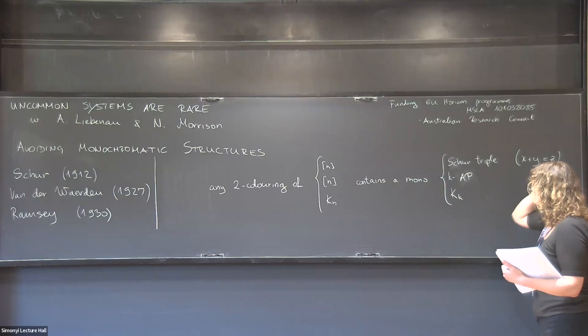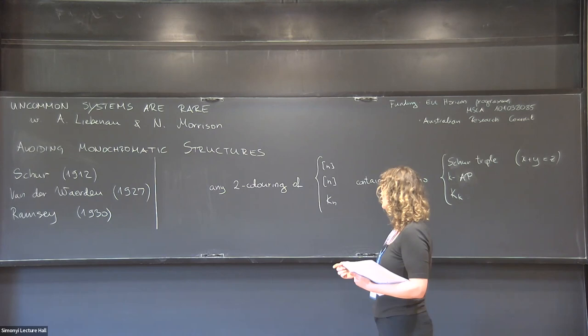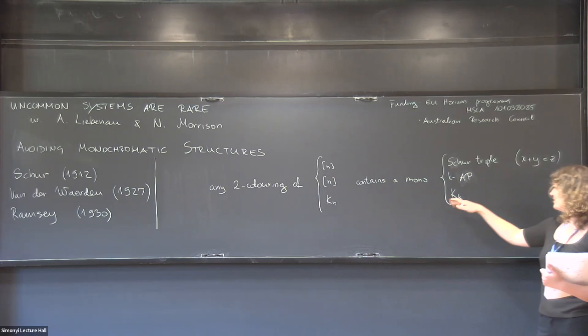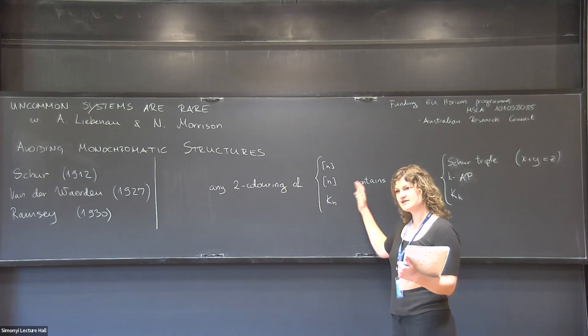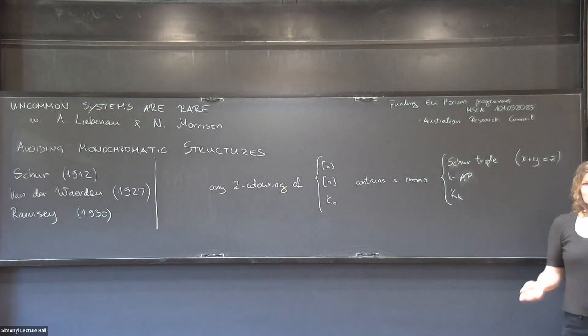The classical theorem of Ramsey, which has been in the spotlight in recent weeks, says you cannot avoid a monochromatic clique in a complete graph. Now we think of n as going to infinity. You can't avoid a Schur triple, but what you might ask is: can I minimize the number of monochromatic solutions?